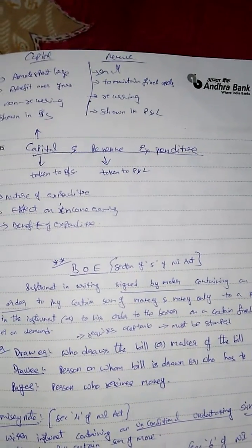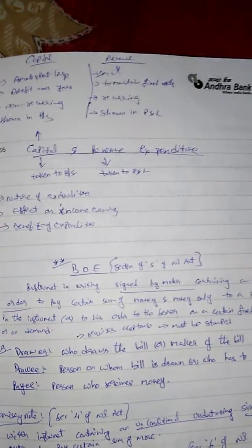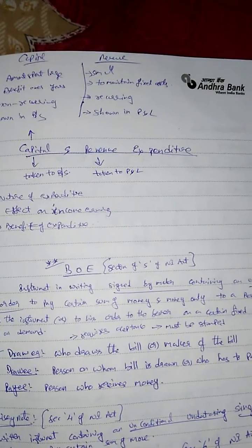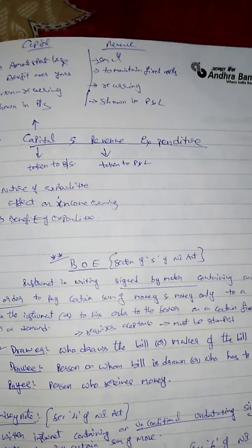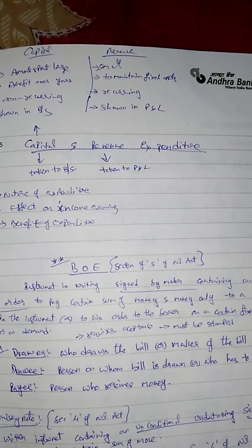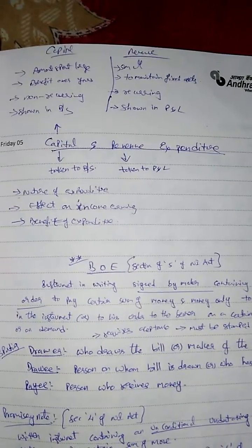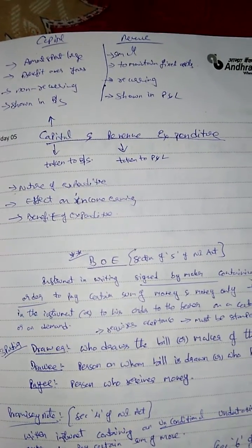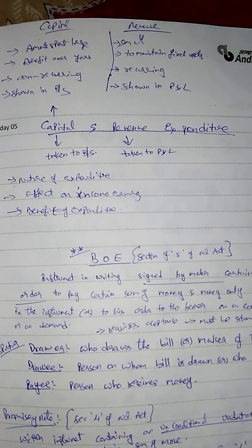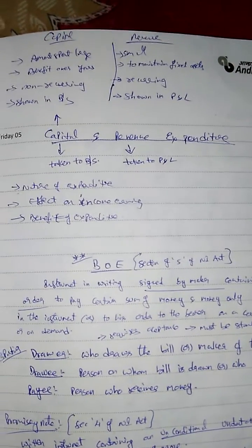Whereas the amount spent in repairs and maintenance of that machinery is revenue expenditure. Amount spent in maintenance of that building is revenue expenditure. Power bill is a revenue expenditure, whereas construction of building expenses is capital expenditure. Normally, capital expenditures are taken into the balance sheet, whereas revenue expenditures are taken to the profit and loss account.